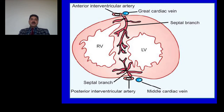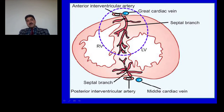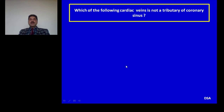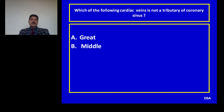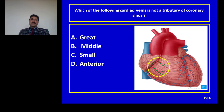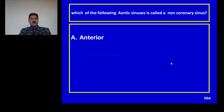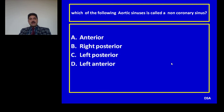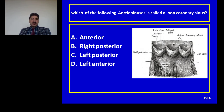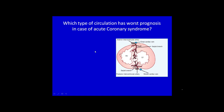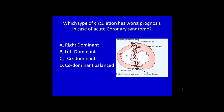Regarding blood supply of the heart: the anterior two-thirds of the interventricular septum is supplied by the septal branch of the left anterior descending coronary artery; the posterior one-third is supplied by the septal branches from the dominant coronary artery; in co-dominance the posterior one-third is supplied by both. Question: Which of the following cardiac veins is not a tributary of the coronary sinus? Options: great, middle, small, anterior. Answer: Anterior cardiac veins are not tributaries of the coronary sinus; they drain directly into the right atrium. Question: Which of the following aortic sinuses is called the non-coronary sinus? Options: anterior, right posterior, left posterior, left anterior. Answer: Right posterior is the non-coronary aortic sinus. Question: Which type of circulation has worse prognosis in acute coronary artery syndrome? Answer: Patients with left dominant circulation have worse prognosis, because in left dominant circulation the whole left ventricle and interventricular septum is supplied by the left coronary artery. The dominant coronary artery is defined as the vessel which gives the posterior interventricular branch.